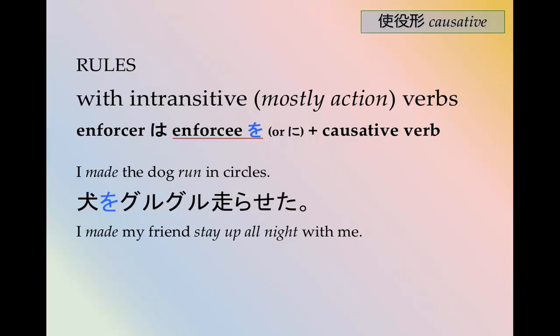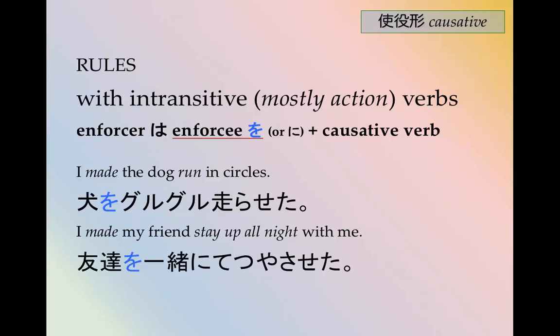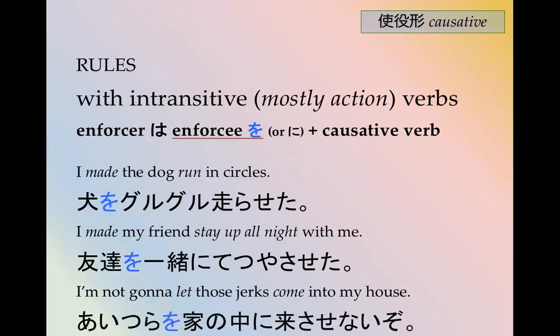I made my friend stay up all night with me — 私は友達を一緒に徹夜させました。 I'm not going to let those jerks come into my house. To come into my house: 家の中に。 Not allow them: こさせない。 あいつらを家の中にこさせないぞ。 The ぞ at the end is emphatic.